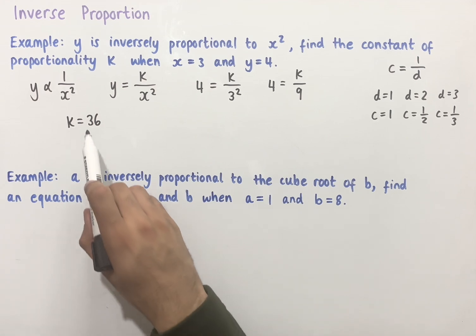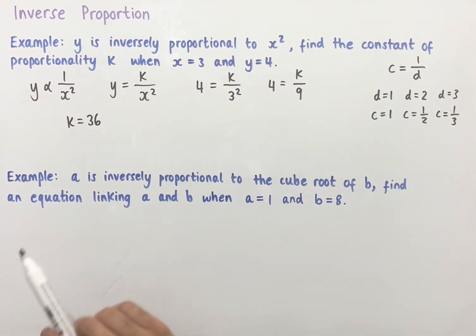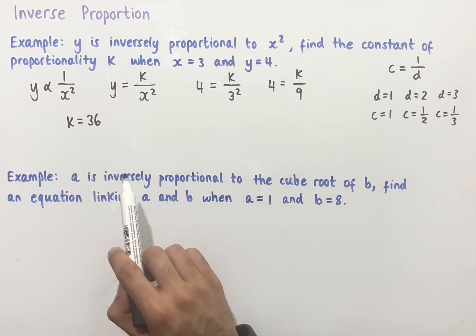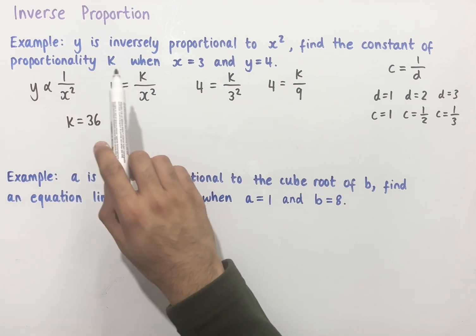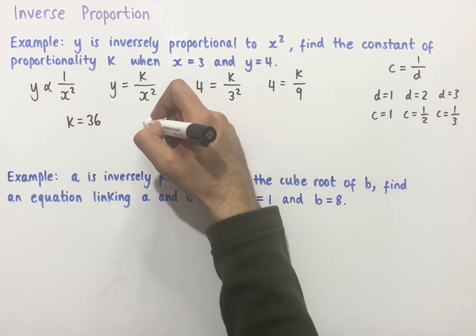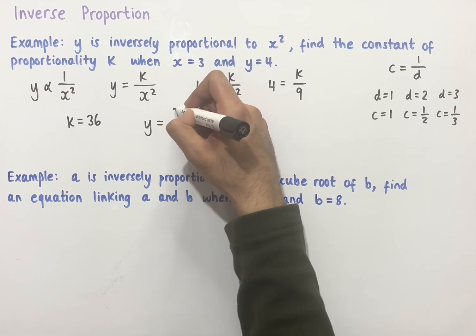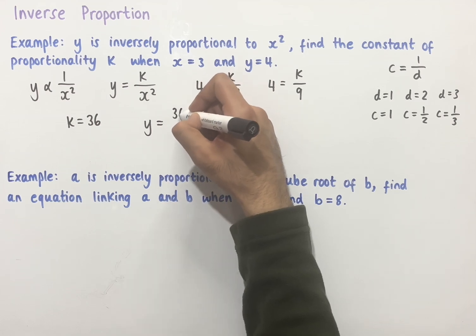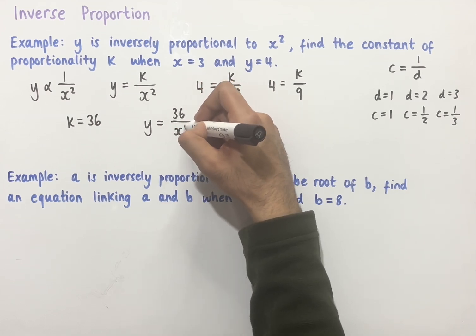So 36 is the constant of proportionality. If we wanted to write the equation that links y and x, we would write this as y equals 36 over x squared.